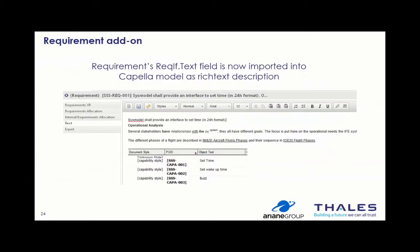The Requirements add-on is another widely used open source add-on, with contributions from Ariane Group and Thales. The requirements text field is now imported into the Capella model as rich text description. This is quite useful when connecting with requirements management tools, using ReqIF XML files to ensure consistency and import of requirements into Capella.